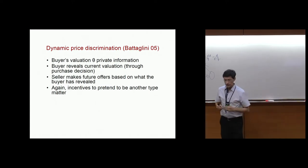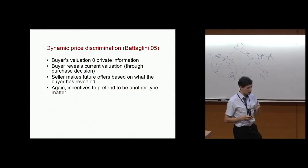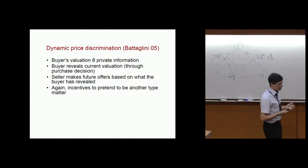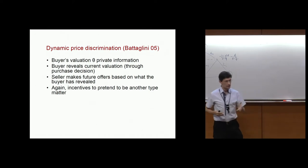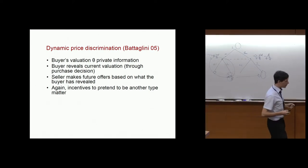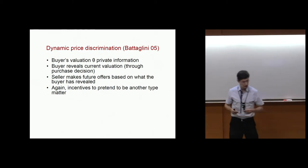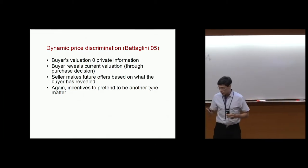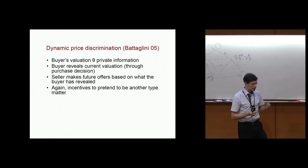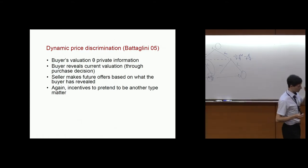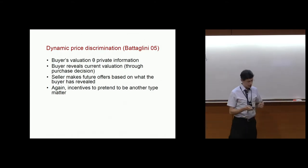Here's a very different example from industrial organizations: dynamic price discrimination. The firm is selling to some customers who have private information about how much they value the product. The firm wants to price discriminate — to charge more to customers who are more willing to pay for the product. The future offers that the customer can receive can depend on the information that the customer has revealed in the past.